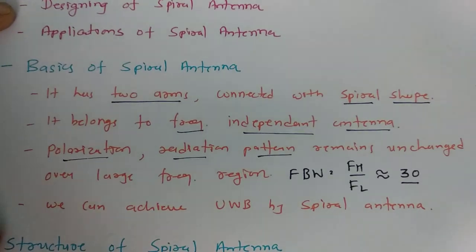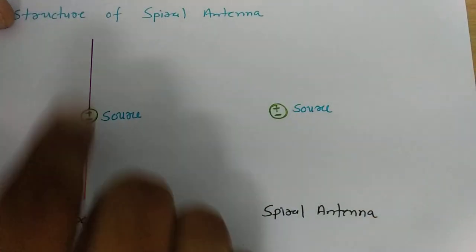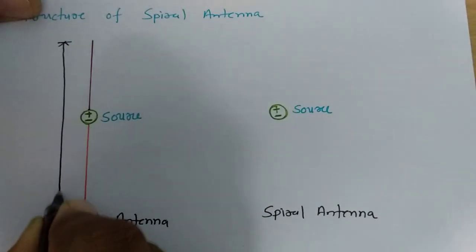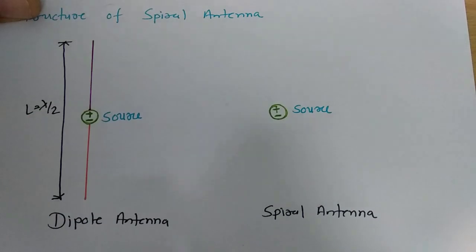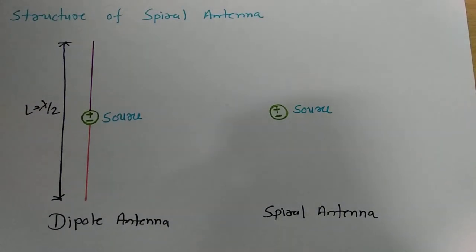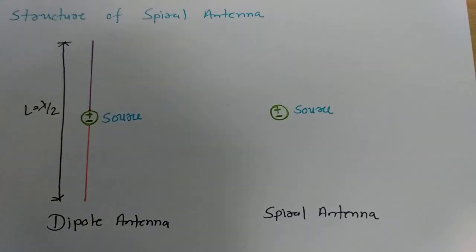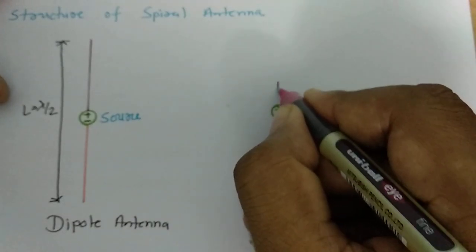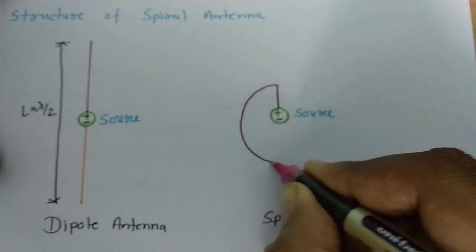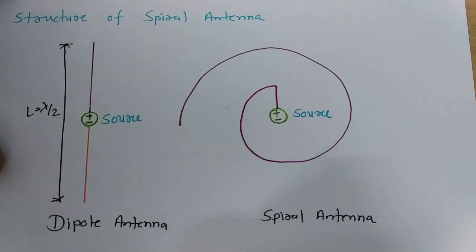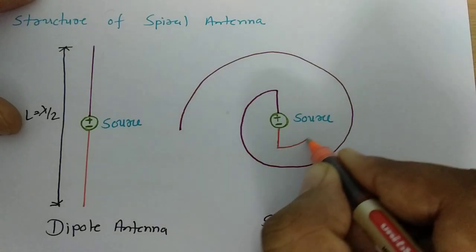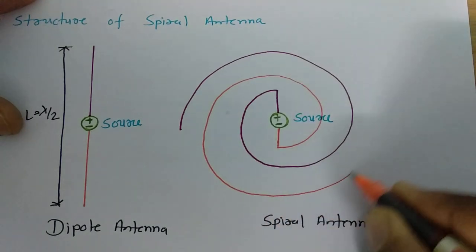Now let us look at the structure of spiral antenna. A dipole has two poles with a length of lambda by 2. For the spiral antenna, we provide a spiral shape to each of the two arms — the first arm is given a spiral shape, and likewise the second arm is also given a spiral shape.